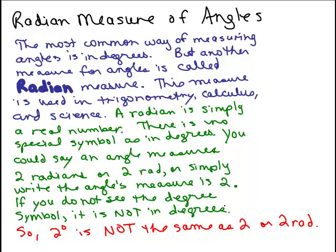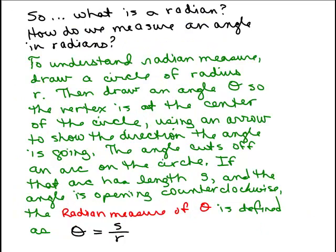It's very important if you're trying to show a measure of angle and you mean 20 degrees, you need to put the degree symbol because if you don't, it means 20 radians and that's a totally different angle. So what is a radian? How do we measure an angle in radians? It takes a little thinking to get used to the idea.